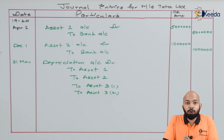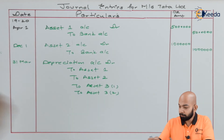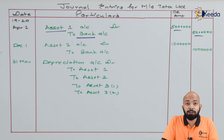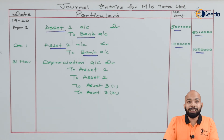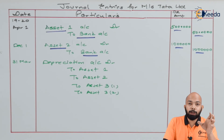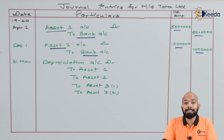Now the journal entries for all transactions. On 1st April: asset one account debit to bank account — 50 lakhs. On 1st December: asset account two debit to bank account — 10 lakhs. The third entry is for depreciation being charged to all assets: depreciation account debit to asset account one, asset account two, asset account three part one, and asset account three part two — as we have two different parts for the third asset. Depreciation amounts are mentioned against each asset.